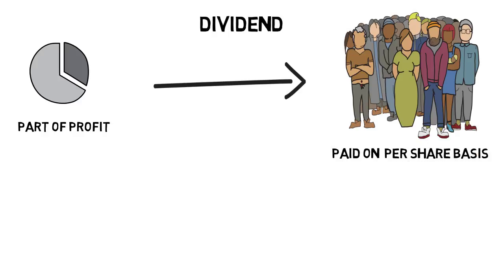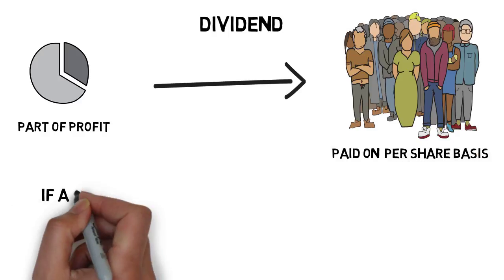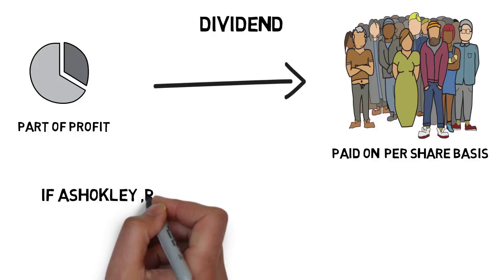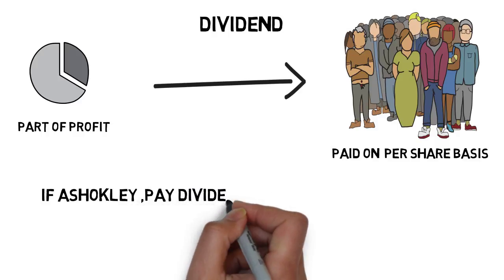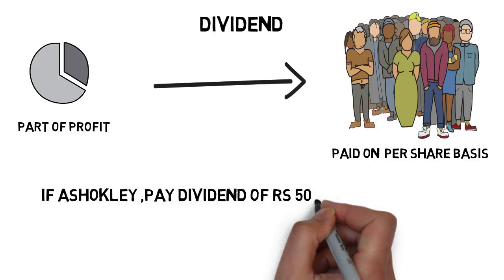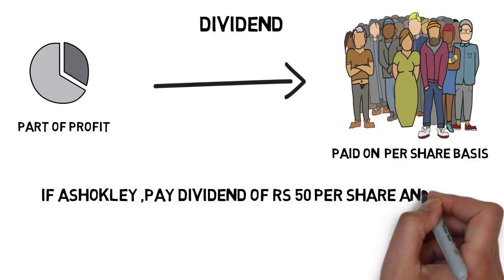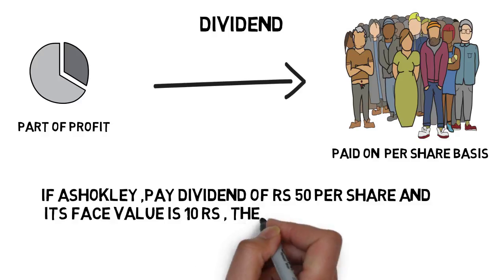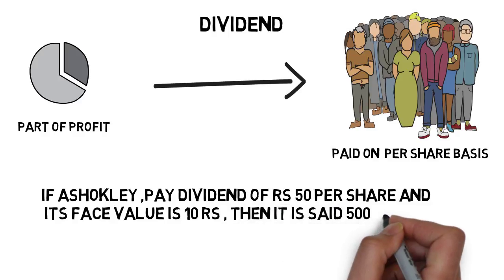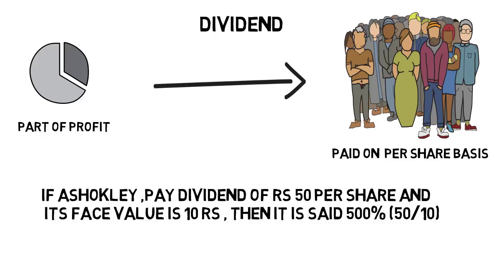Suppose Ashok Leyland pays a dividend of 50 rupees per share and its face value is 10 rupees, then it is said to be 500% dividend.